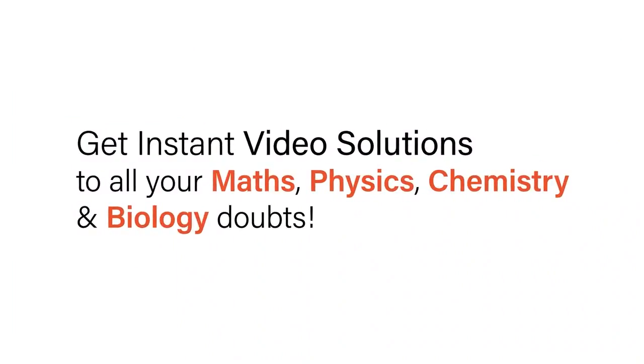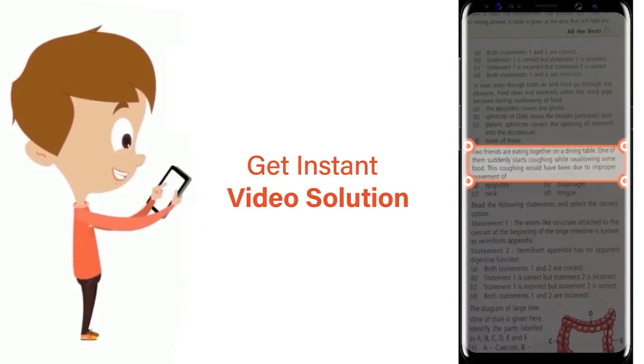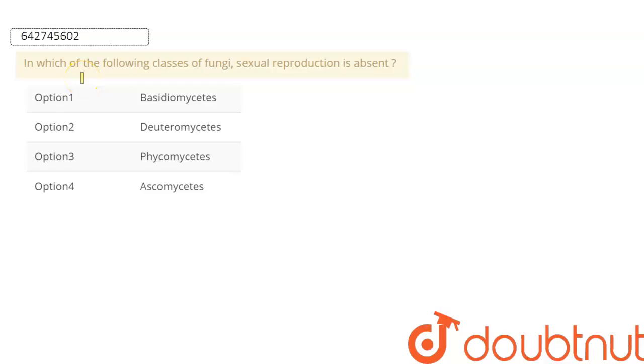With Doubtnut, get instant video solutions to all your maths, physics, chemistry, and biology doubts. Just click the image of the question, crop it, and get instant video solution. Hello everyone, let's see what today's question is. It says: In which of the following classes of fungi is sexual reproduction absent?